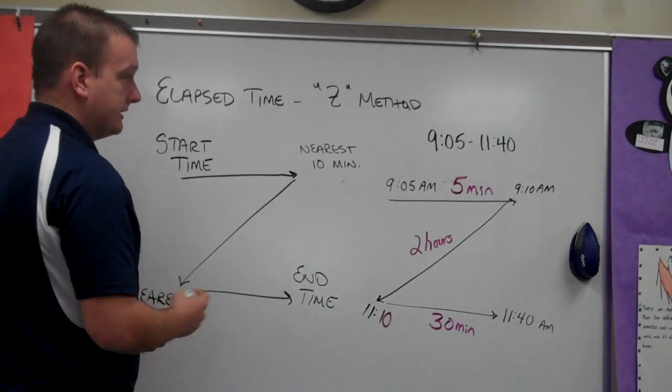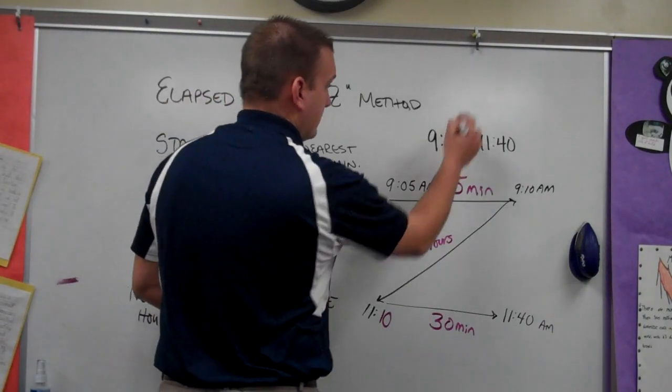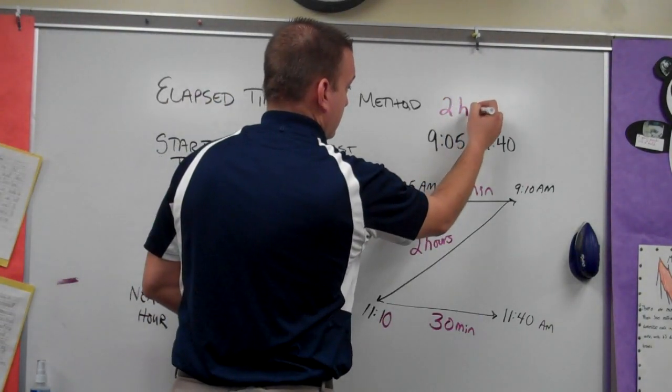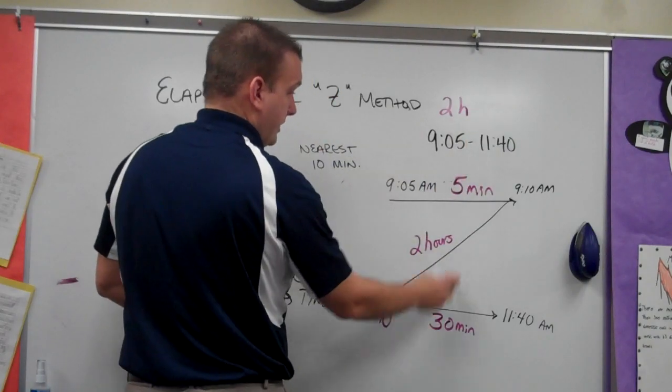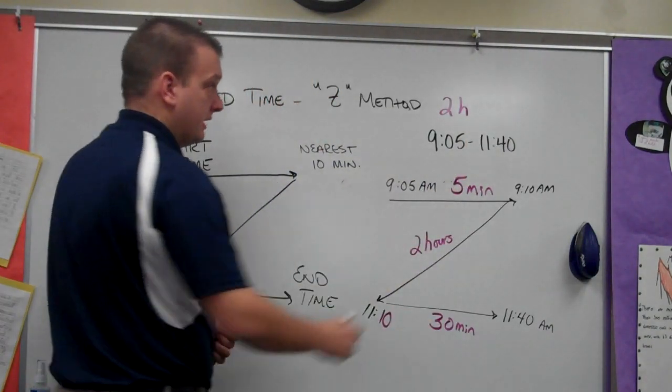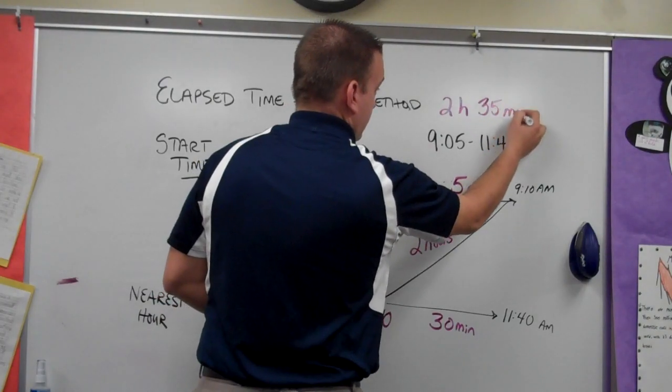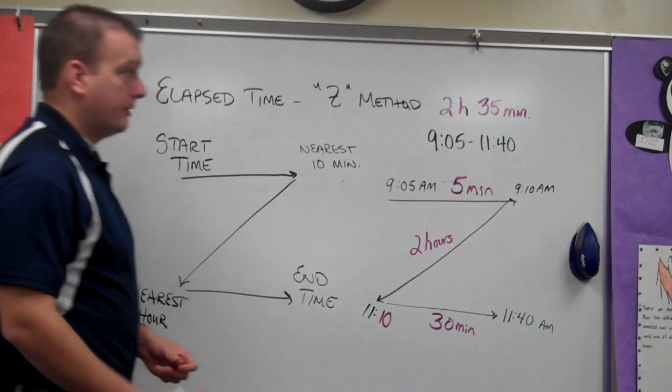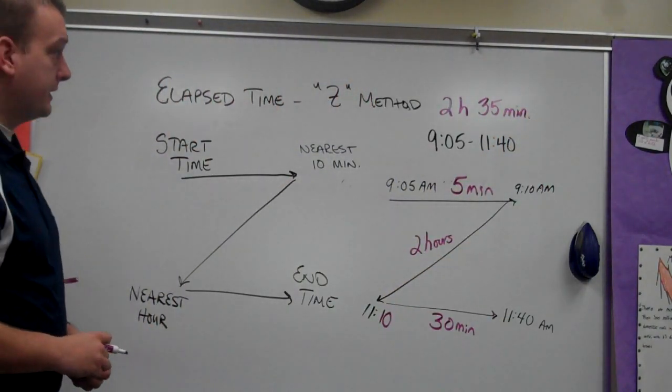So now, when I add these up, I have two hours. And then I add 30 plus five for the minutes to give us 35 minutes for an elapsed time of two hours and 35 minutes.